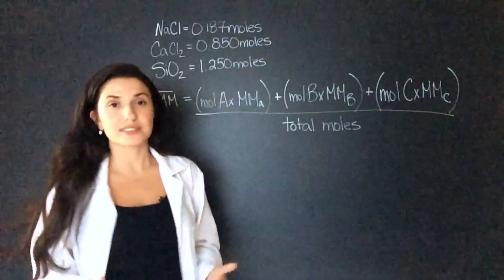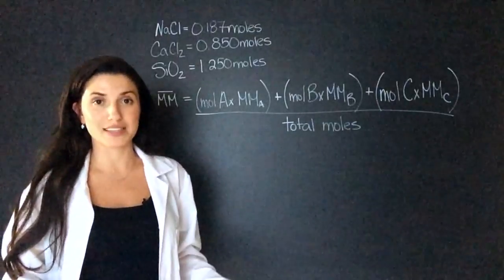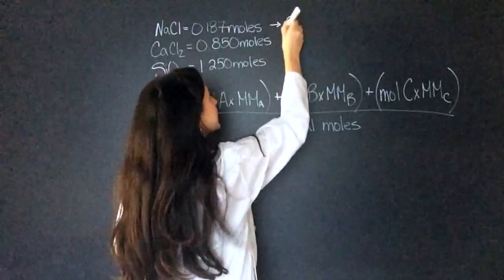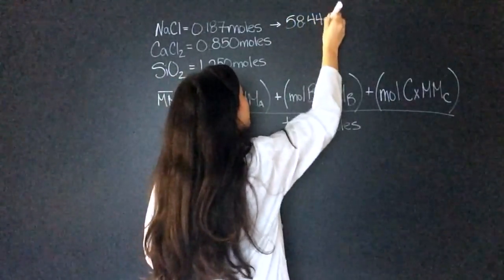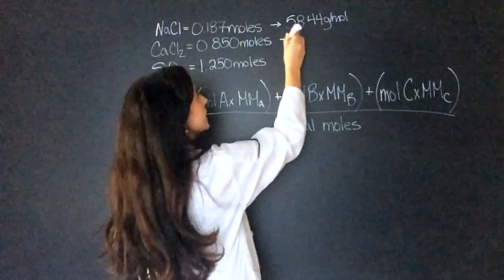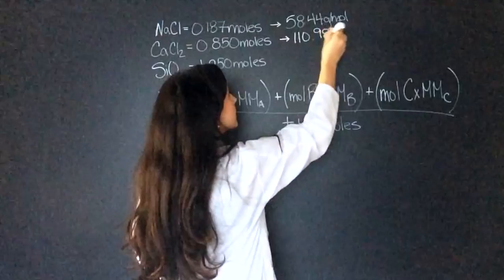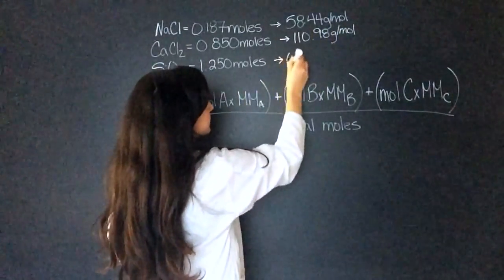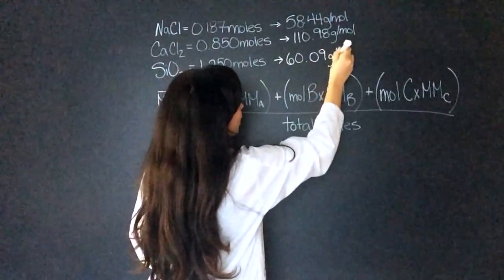So you'll have to calculate the molar mass. And if you need a review, please go watch my moles, mass, and molar mass video. The molar mass of sodium chloride is 58.44 grams per mole. Calcium chloride is 110.98 grams per mole. Silicon dioxide is 60.09 grams per mole.